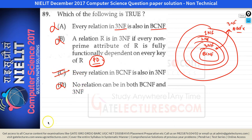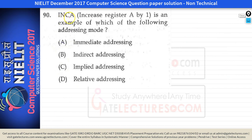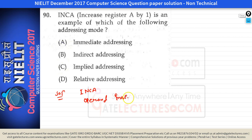Option C is the right answer: every relation in BCNF is also in 3NF. Option D says no relation can be in both BCNF and 3NF — this is false, since relations in BCNF are always also in 3NF. Question number 90: the instruction INCA (increment register A by 1) is an example of which addressing mode? Since you have no explicit operand and the operand is implied within the opcode, this is implied addressing mode — the operand is implied from the opcode itself.